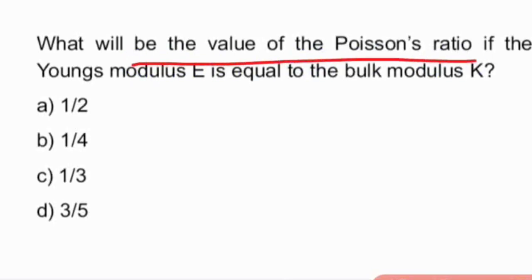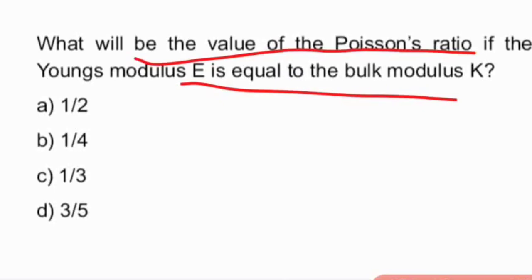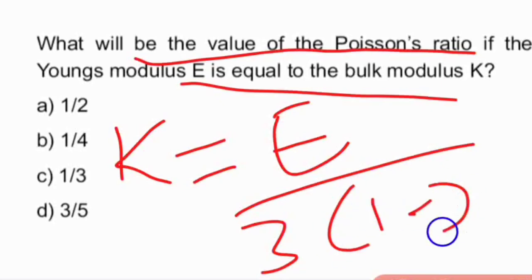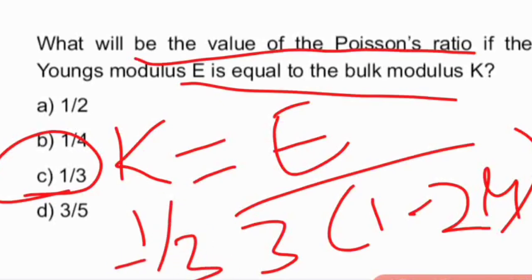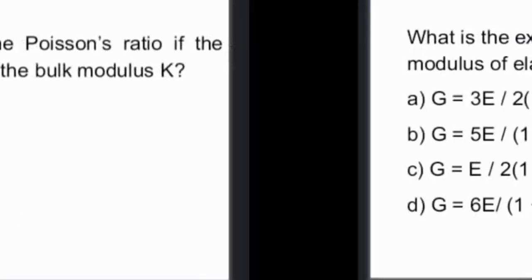Next question: what will be the value of Poisson's ratio if Young's modulus E is equal to the bulk modulus? This can be found using the equation: Bulk modulus K = E / (3(1 − 2μ)). Solving this, the answer is option C — 1/3. So the value of Poisson's ratio when Young's modulus equals bulk modulus is 1/3.